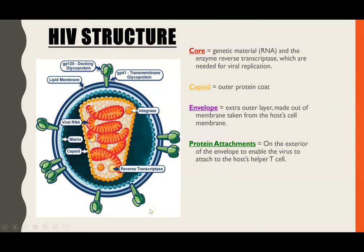The structure of HIV you would need to know. The key things are: first, the core, which is made up of RNA as the genetic material and the enzyme reverse transcriptase — both of these are needed for viral particles to replicate inside the host cell. It also has an outer protein coat, the capsid, shown here in orange.